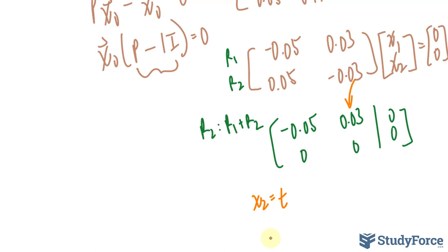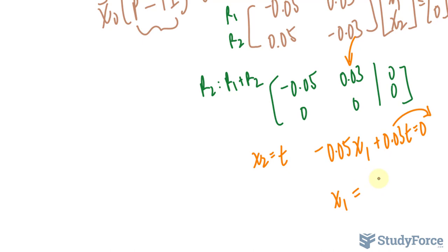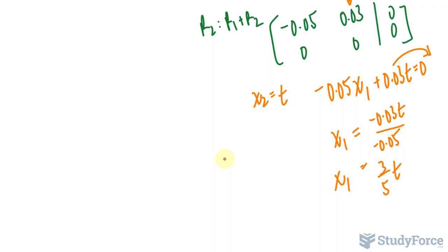Setting this column as my parameter, x sub-2 is equal to t, I can now go ahead and solve this. Think of it this way: we have negative 0.05 x sub-1 plus 0.03t is equal to 0. x sub-1 is equal to that being transferred over, negative 0.03t over negative 0.05, and we get 3 over 5t is x sub-1.